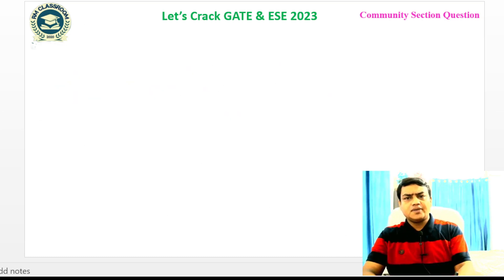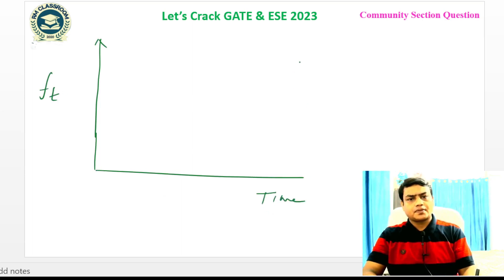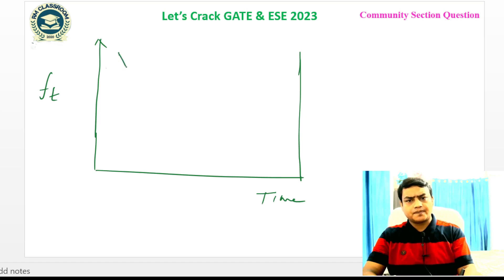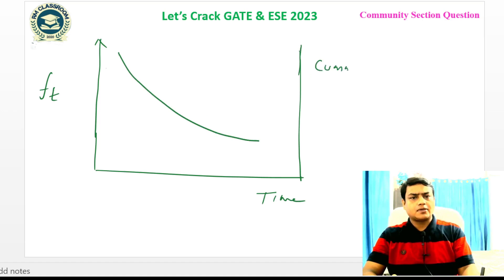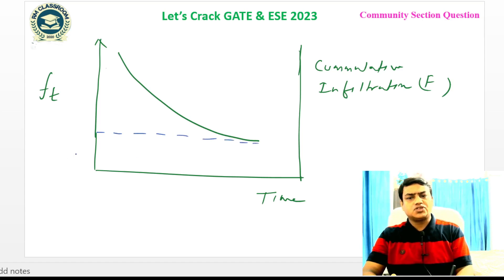If we look at the graph of infiltration capacity with FT on the Y-axis and time on the X-axis, we get a curve that decreases with time. The value where the curve becomes constant is Fc — the steady infiltration capacity.